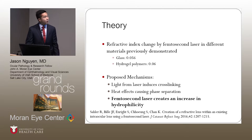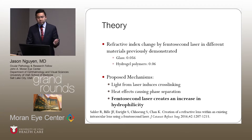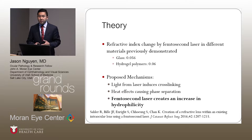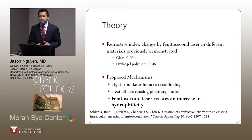I want to talk about some of the background theory that has been proposed. Refractive index changes by femtosecond laser have been experimented with in different materials in previous years, affecting up to a change of 0.056 in glass and 0.06 in hydrogel. Some of the proposed mechanisms behind how it happens: the light from the laser induces cross-linking within the material, which increases the refractive index; or local heat effects from the laser causing a phase separation in the material, thereby affecting the refractive index.